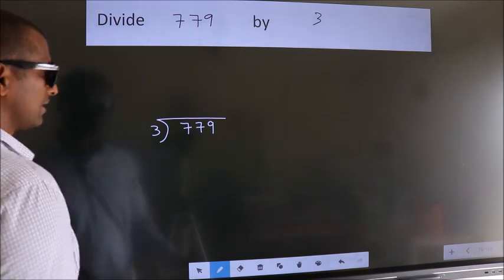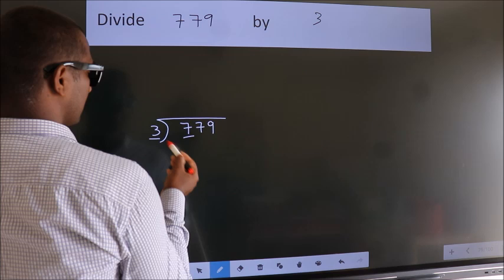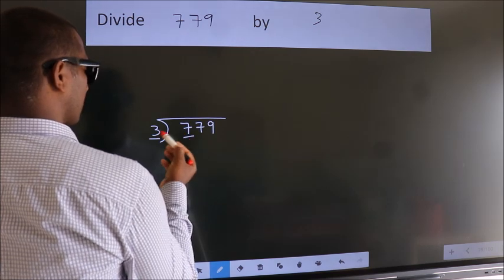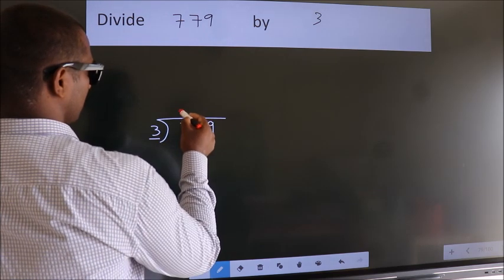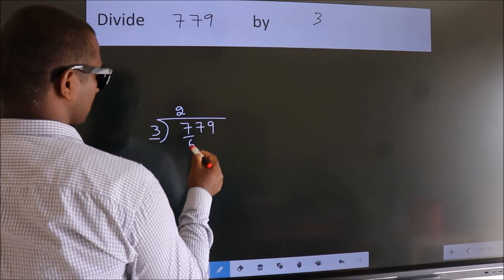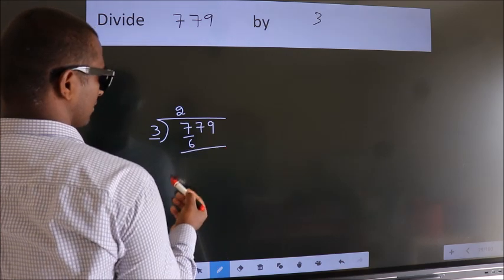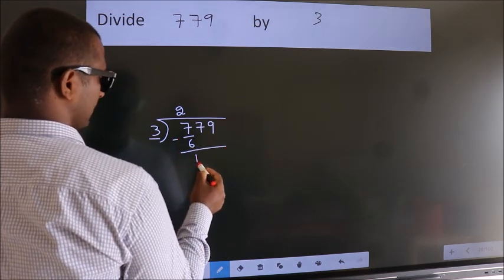Next. Here we have 7, here 3. A number close to 7 in 3 table is 3 twos 6. Now we should subtract. We get 1.